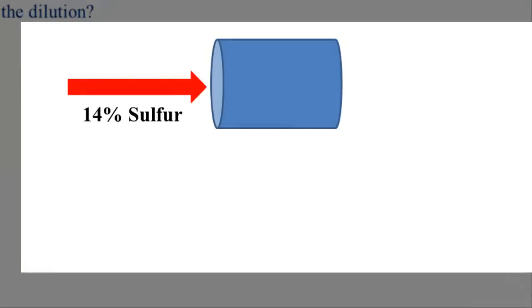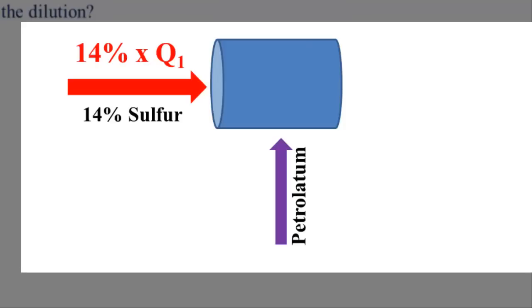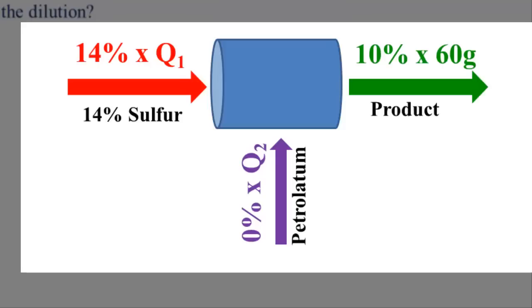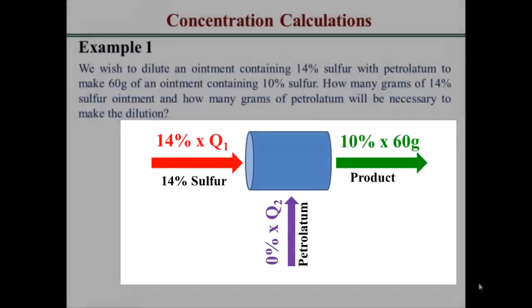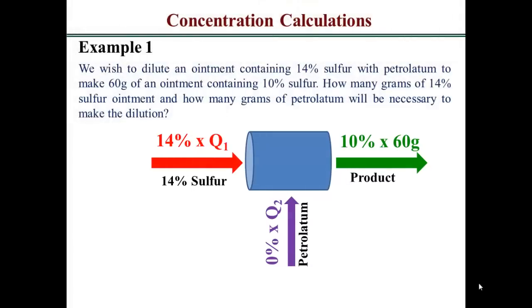Putting in the information: for the 14% sulfur we know the concentration but not the quantity — that's what we're calculating. Petrolatum concentration is 0. For the final product: 10% weight-by-weight times 60 grams tells us the final preparation should contain 6 grams of sulfur — because 10 grams per 100 grams times 60 gives 600/100 = 6 grams.